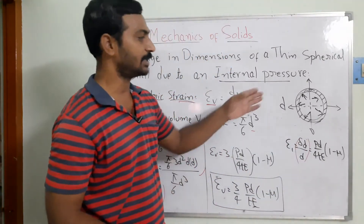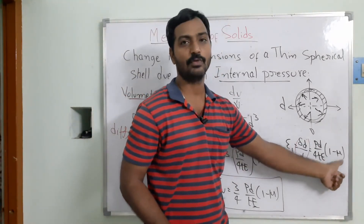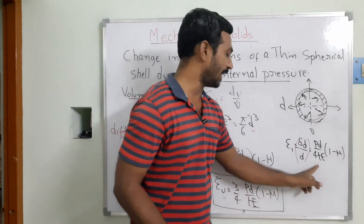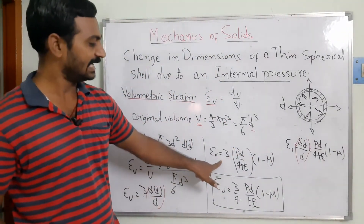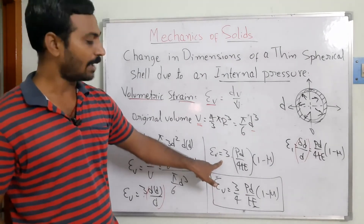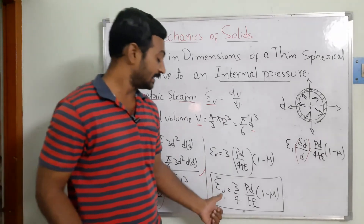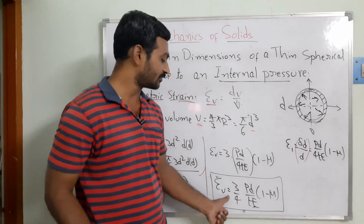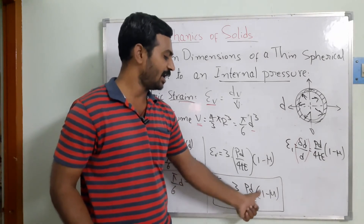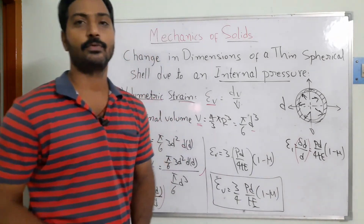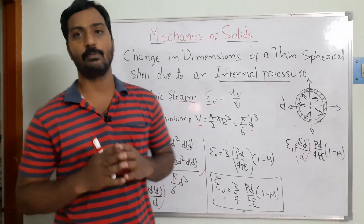Substituting delta-D/D = PD/(4tE) * (1 - mu) into epsilon_V = 3 * (delta-D/D), we get the volumetric strain: epsilon_V = 3PD/(4tE) * (1 - mu), where mu is Poisson's ratio. This is the mathematical model for the dimensional change of a spherical shell subjected to internal pressure.